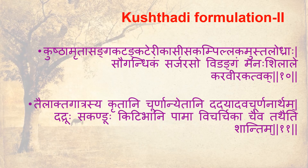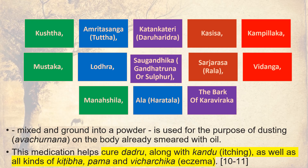Kushtadi Formulation 2: Kushta, Amrda, Sangha, Kadangkaderi, Kasisa, Kambilnagam, Ustalodra, Sawgandigam, Sarjarasa, Vedangam, Manashila, Alay — the bark of Karaviraka mixed and ground into powder is used for the purpose of dusting (avachorna) on the body already smeared with oil. This medication helps cure dadru along with kandu, as well as all kinds of kilipa, pama and vicharchiga.